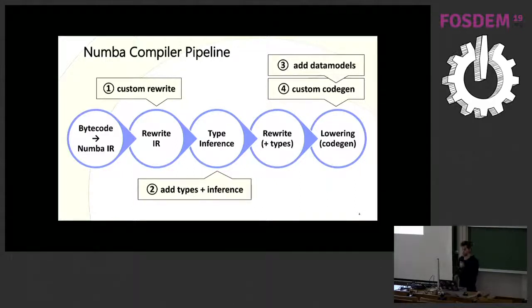With those extension points, you can add your own stuff to the compiler pipeline. You start with Python source code. This will be translated into Python bytecode. And then Numba will transform this Python bytecode in its own representation, Numba intermediate representation. It's basically an abstraction over bytecode.